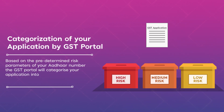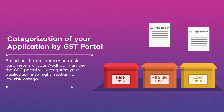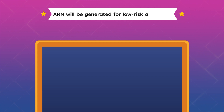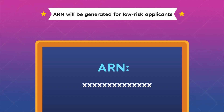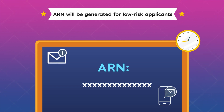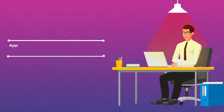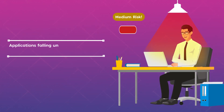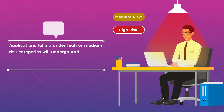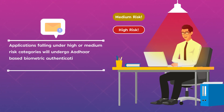You will need to verify these details using a digital signature or e-signature. Based on the predetermined risk parameters of your Aadhaar number, the GST portal will categorize your application into high, medium, or low risk categories. If your application falls under the low risk category, your ARN will be generated and forwarded to your registered email ID and mobile number, and the application shall be processed further within the stipulated duration. However, if your application falls under medium or high risk categories, you will receive an email to book an appointment for biometric authentication and document verification at your selected GST Seva Kendra.